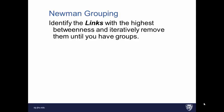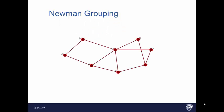So we're going to go with a very common grouping. It's called the Newman grouping. It's actually proposed by Newman and Girvan. But everybody just calls it a Newman grouping. I feel bad for Girvan. He seems like a nice guy. I should call it the Newman and Girvan grouping. But it's more commonly referred to as Newman grouping. So essentially the way this works is you're going to identify links with the highest betweenness and iteratively remove them until you have groups. So I'll show you how this works. Let's use this as a network.